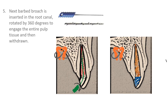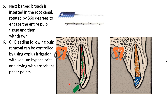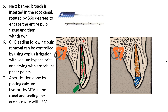A barbed broach — a thin soft iron wire instrument with angular cuts producing small projections called barbs — is inserted fully into the canal, rotated 360 degrees to engage the entire pulp tissue, and pulled out. The objective is to remove the pulp in a single core; if not achieved, the process is repeated. Bleeding is controlled using copious irrigation with sodium hypochlorite solution and drying with absorbent paper points. Once the entire pulp is removed from the chamber and canal, pulpectomy is complete.